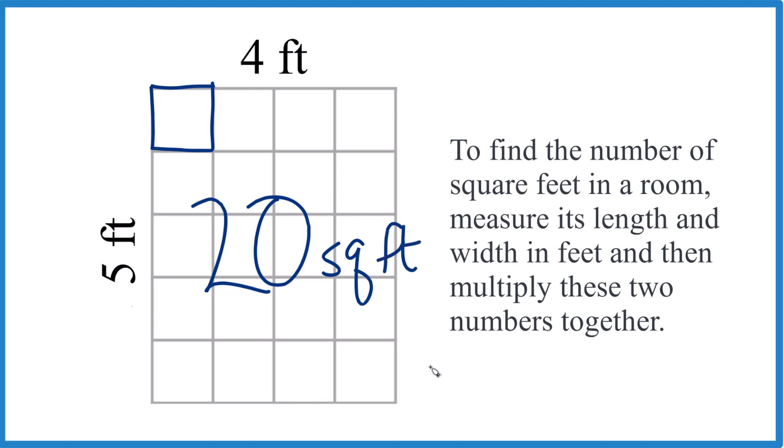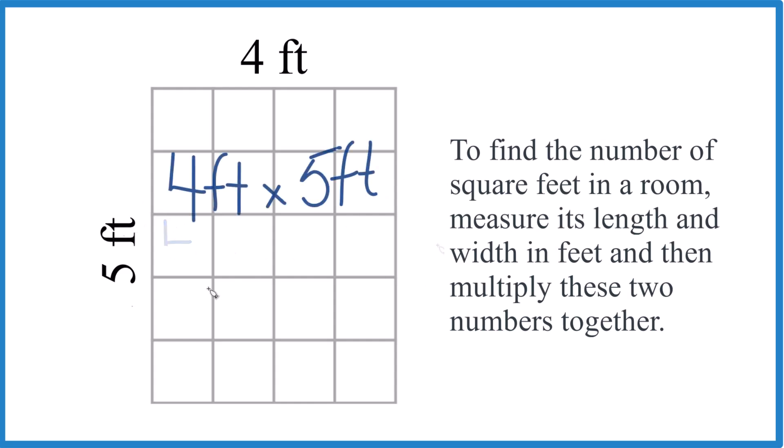And the way you figure this out is basically you're just taking four feet times five feet like this. Four times five is 20 and feet times feet, that's feet squared. Let's just call it square feet.